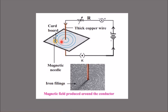In the picture you can see how the concentric lines are formed around the wire on the cardboard. This shows that as we increase the current, more magnetic field is produced. We can conclude from this experiment that the strength of the magnetic field depends on the strength of the current — the magnetic field increases with increase in current and decreases with decrease in current.